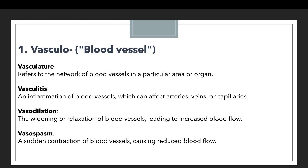The fourth example is vasospasm. Vasospasm is a sudden contraction of blood vessels causing reduced blood flow — this is the condition for which a procedure like vasodilation may be performed to treat. In vasodilation we are widening or relaxing the blood vessel to increase blood flow, whereas in vasospasm there is a sudden contraction causing reduced blood flow. If you look at all these examples together, you will find one common theme: everywhere we are talking about blood vessels.